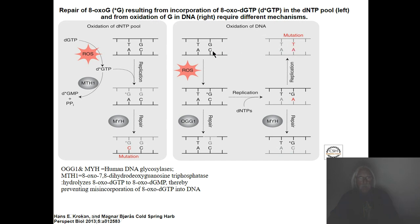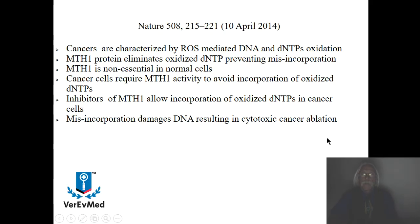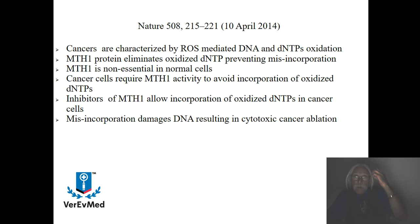Either way, when you have alteration of the deoxy-NTPs or oxidation of DNA, you're going to end up with a T-A where you had a G-C before. We call that a transitional point mutation — it transitions from G-C to T-A. MTH1 is actually non-essential in normal cells because you have multiple ways of dealing with this — you have a repair system, you have DDR, you have BER DDR. MTH1 is non-essential, meaning you can knock it out and your cells are still okay.